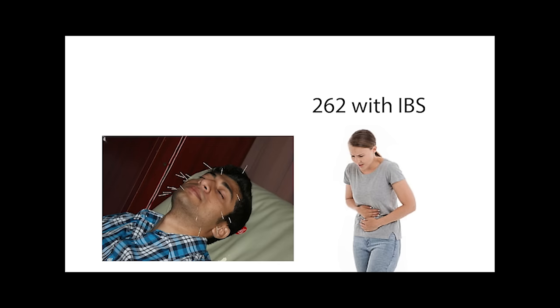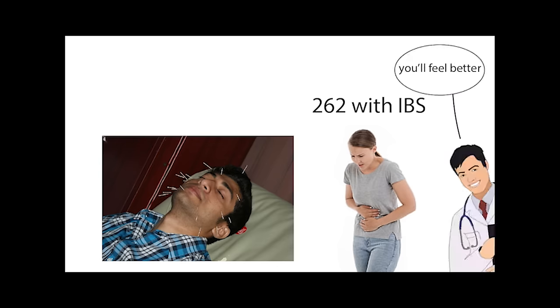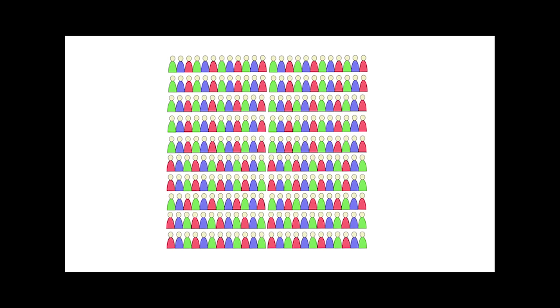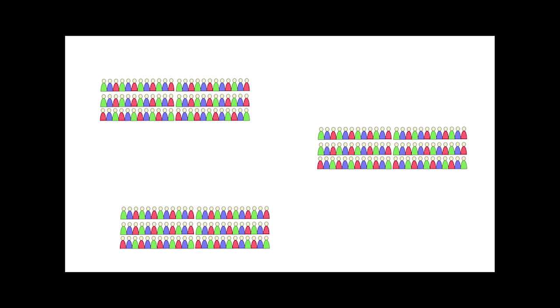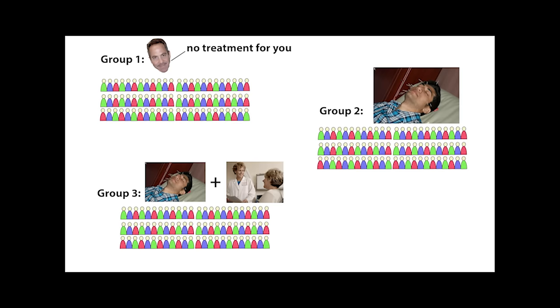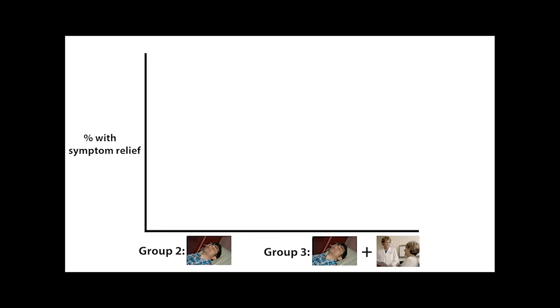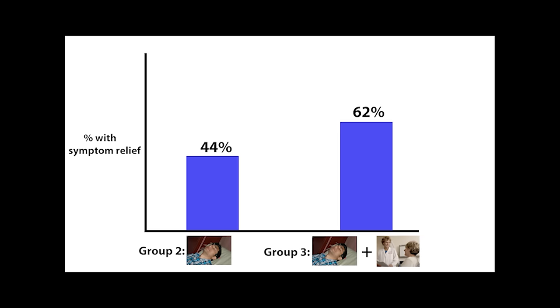In a study by the British Medical Journal, patients with IBS were treated with acupuncture and were told the treatment would reduce their effects. 262 participants were split into three groups. Group 1 was given no treatment, group 2 was given only acupuncture, and group 3 was given acupuncture and spoke with a healthcare professional. As a result, 44% of group 2 noticed an adequate reduction in their symptoms. Group 3, on the other hand, showed a 62% reduction in their symptoms. The increase in relief in group 3 was associated with the patient-practitioner relationship.